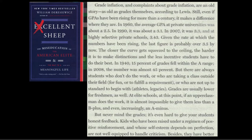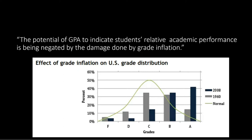Here's William Dereziewicz discussing grade inflation in elite U.S. schools. In 1960, the average GPA at private universities was about 2.5. In 1990, it was about 3.1. In 2007, it was 3.3, and at highly selective private schools, 3.43. Given the rate at which the numbers have been rising, the last figure is probably over 3.5 by now. The closer the curve gets squeezed to the ceiling, the harder it is to make distinctions, and the less incentive students have to do their best. In 1940, 15% of grades fell within the A range. In 2008, the number was almost 45%.